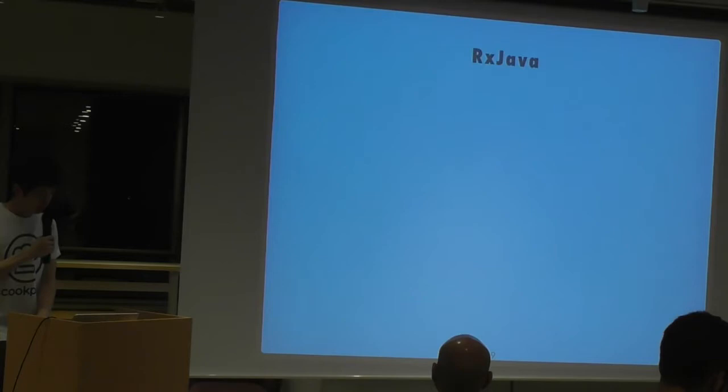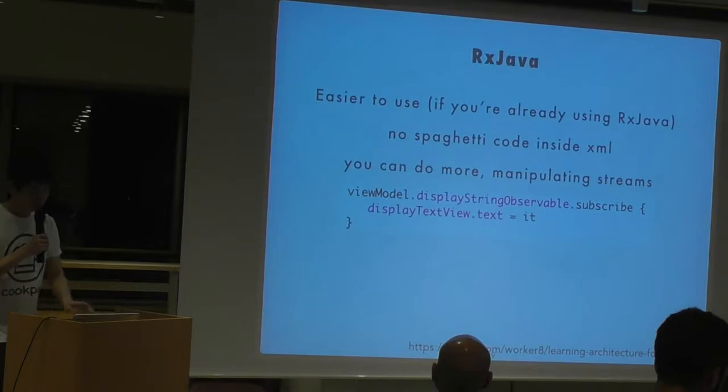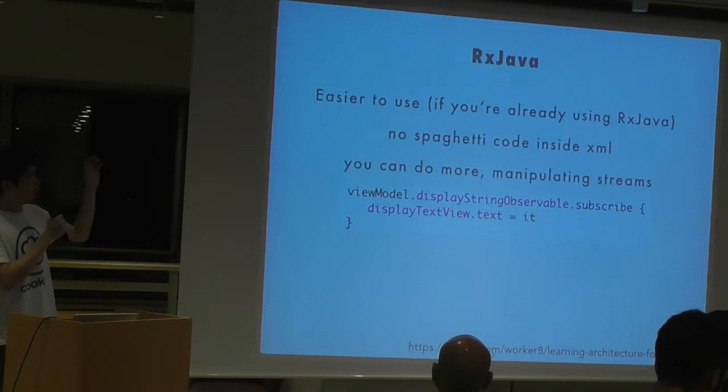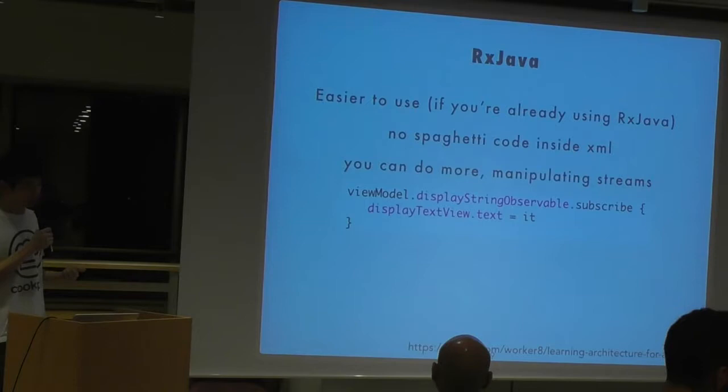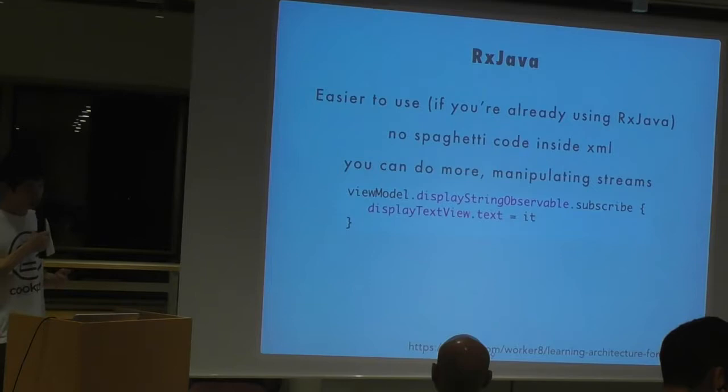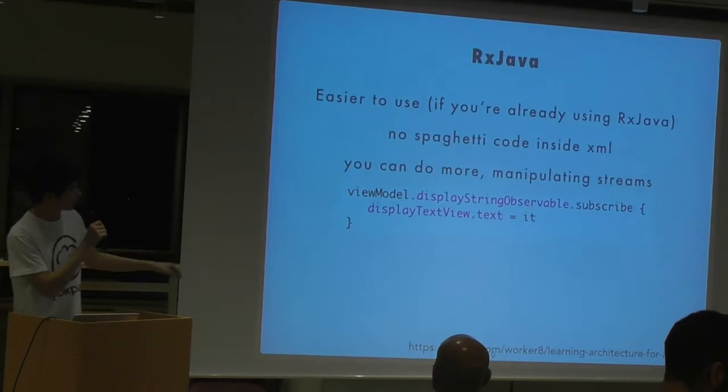If you do it using the RxJava approach, it's recommended to use RxJava if you're already using it, because you won't need to learn a new library. There's no observable confusion issue from two different libraries, and there's no logic code inside the XML. Here's how the sample could look: this is how you bind the view model with the view itself.